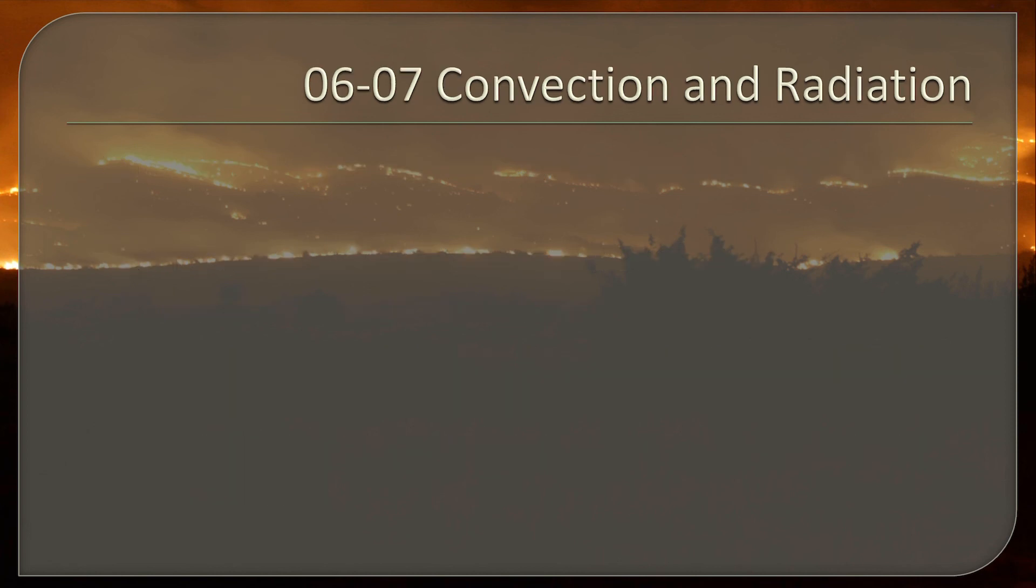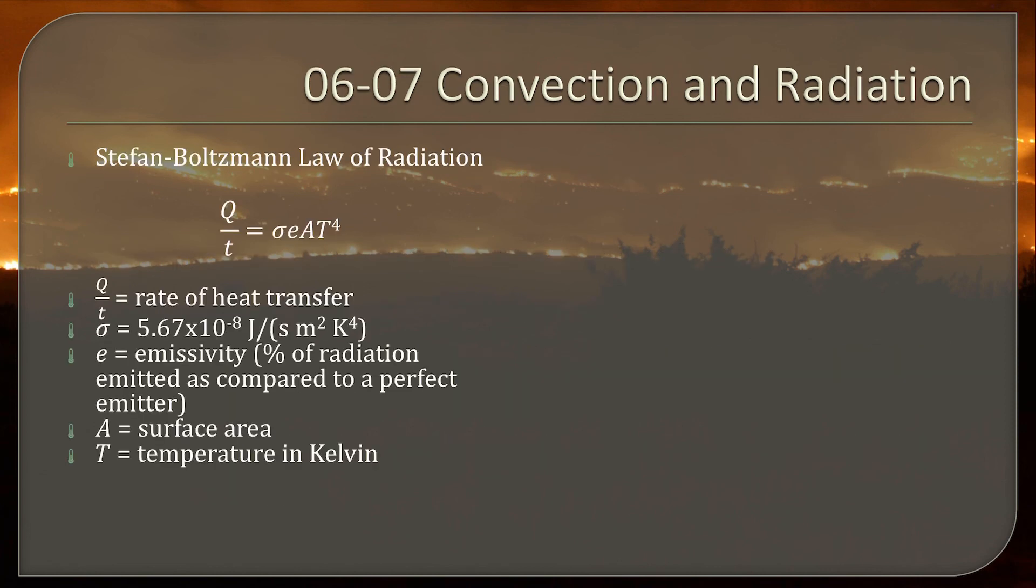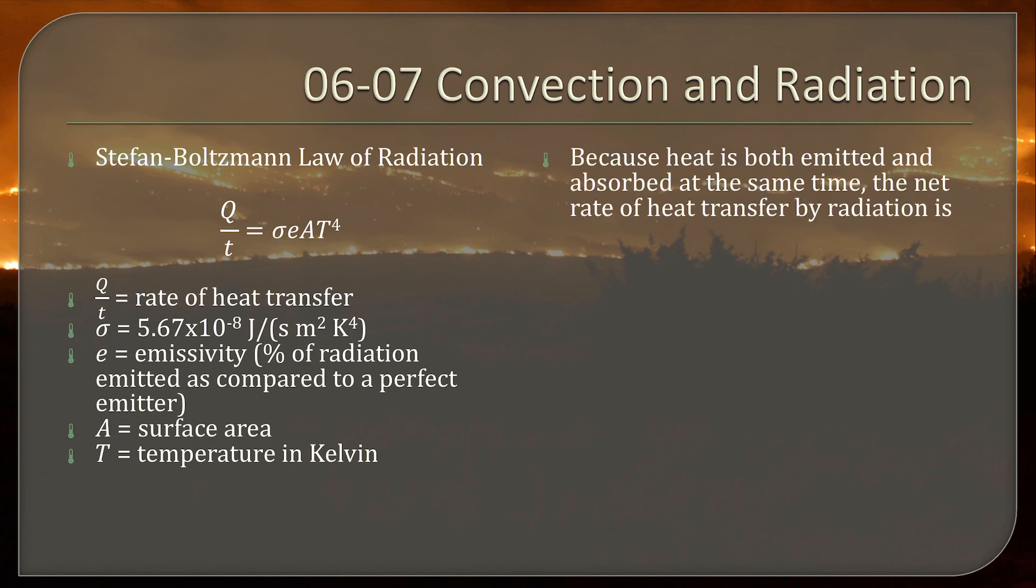So of course we have a formula for radiation. It's the Stefan-Boltzmann law of radiation. So Q over T is the rate of heat transfer. And then we have Stefan-Boltzmann's constant, 5.67 times 10 to the negative 8 joules per second meter squared Kelvin to the fourth. E is the emissivity, which is the percent of the radiation emitted as compared to a perfect emitter. A is the surface area and T is the temperature in Kelvin. And notice it's T to the fourth. So this temperature very much affects the amount of heat transfer.